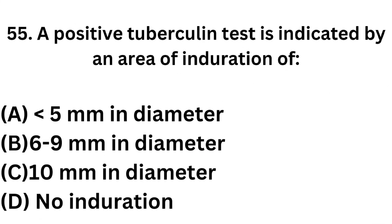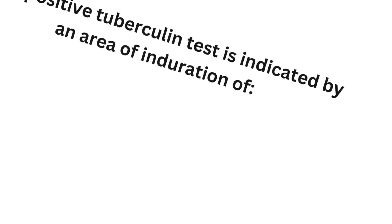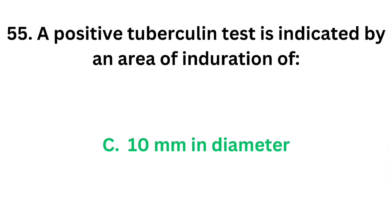Question number 55: A positive tuberculin test is indicated by an area of induration of. Option A: Less than 5 mm in diameter. Option B: 6-9 mm in diameter. Option C: 10 mm in diameter. Option D: No induration. The correct answer is option C, 10 mm in diameter. A positive tuberculin test is indicated by an area of induration of 10 mm in diameter.